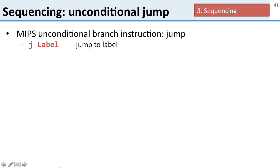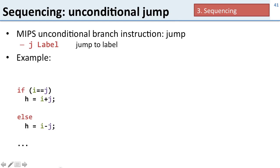In addition to conditional jumps we also have unconditional jumps. The jump instruction jumps to a label regardless of anything else — it always says go to that label.